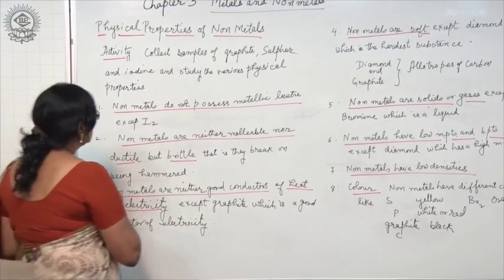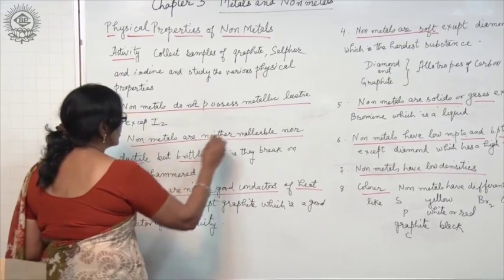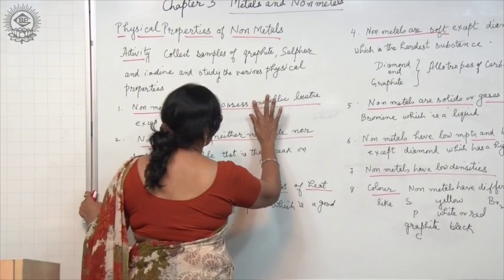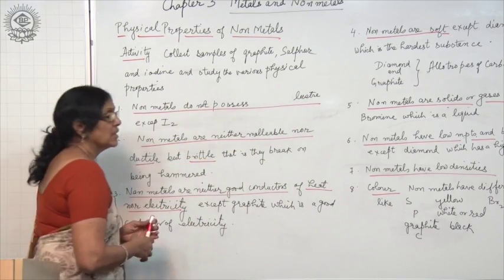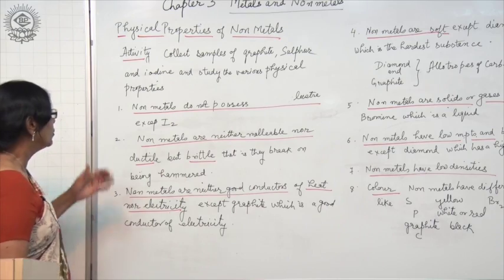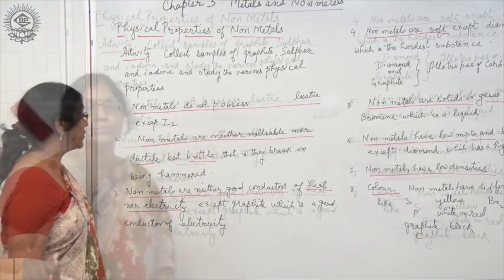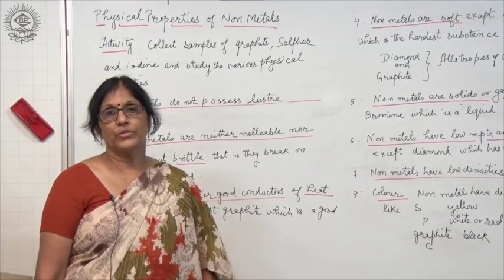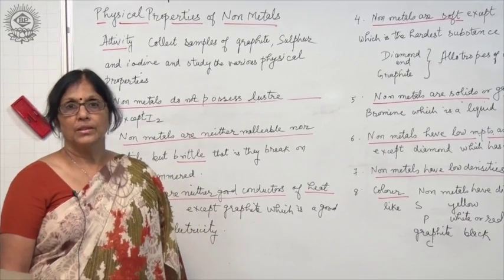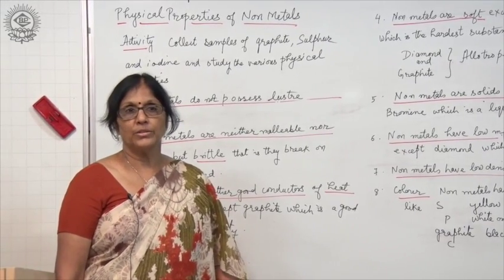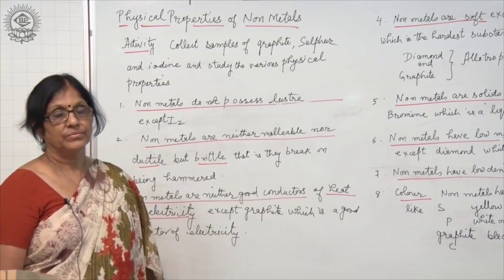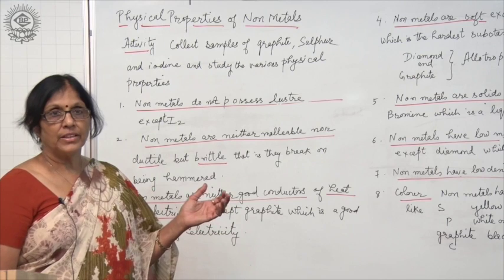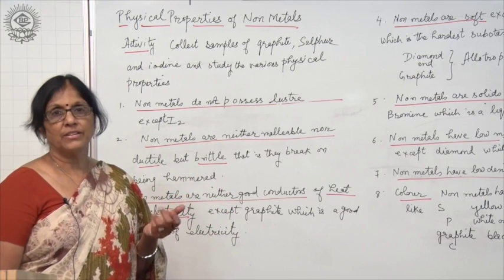Non-metals do not possess luster. The luster is present only in the case of metals. They do not possess a shining surface. Observe the surface of the non-metals. You will find that non-metals do not possess a shining surface like metals. Non-metals have a dull surface.